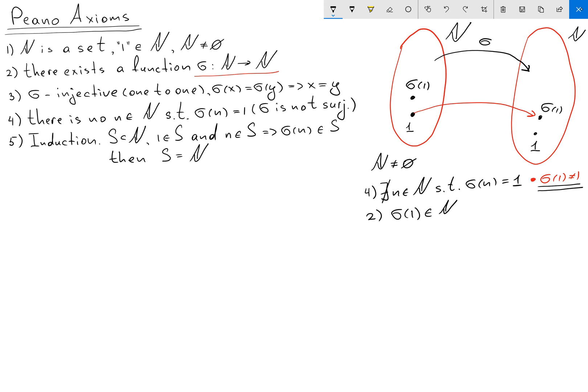And we're going to continue this procedure. How are we going to do this? We're going to take this second element sigma of 1 and map this element to our set N. We're going to get element sigma of sigma of 1.